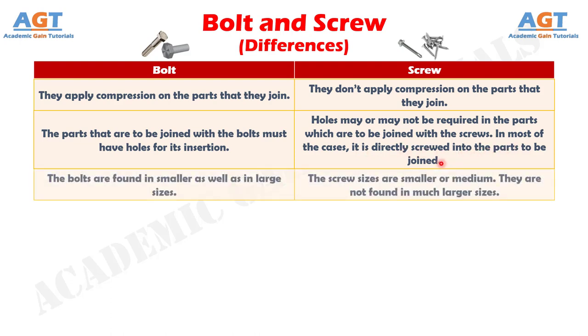Number 11: Bolts are found in smaller as well as large sizes, whereas screws are smaller or medium in size. They are not found in much larger sizes.